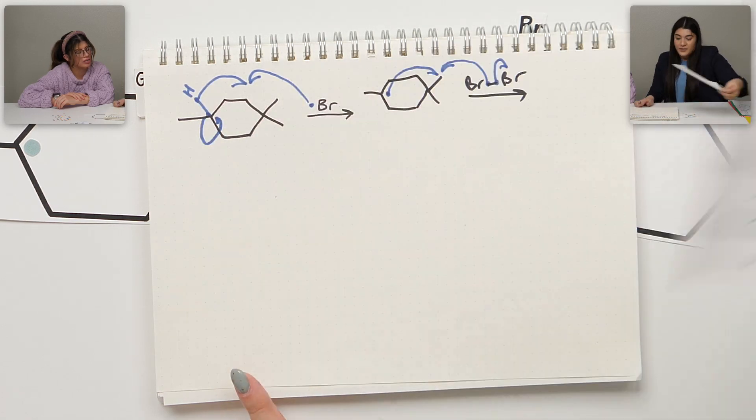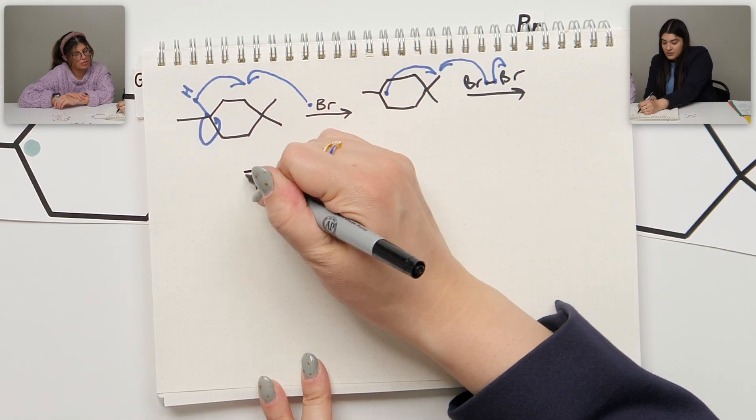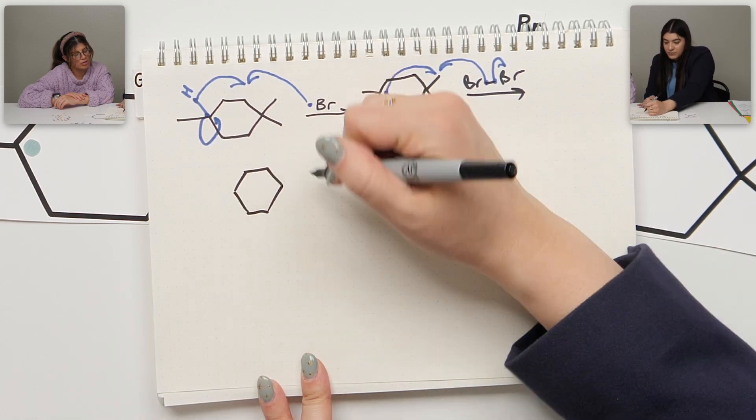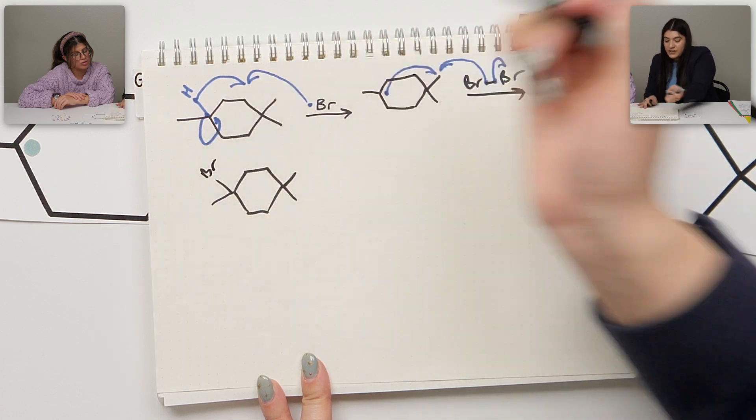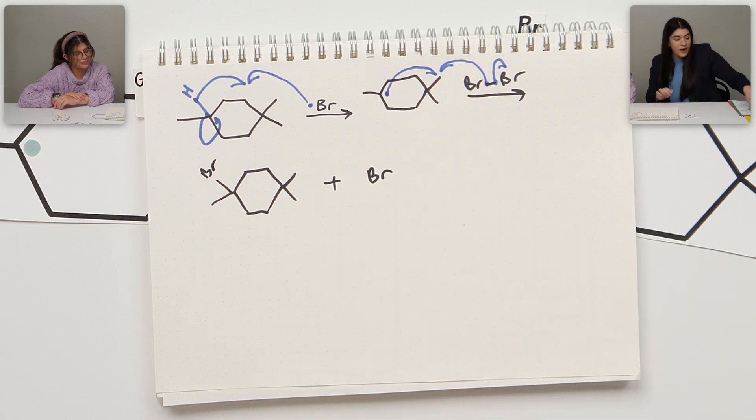So I'll show that. And I know the last step here—I'll draw that out—was just attaching on that bromine, and again we reformed that radical. Show the radical in blue. But that would have been the propagation step, which again, it is the main one that we care about.